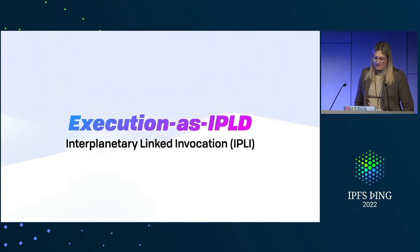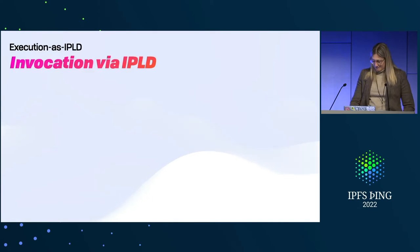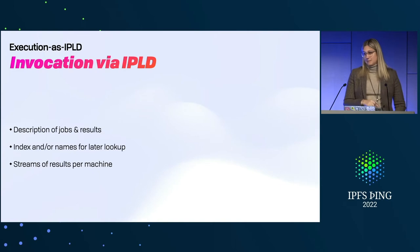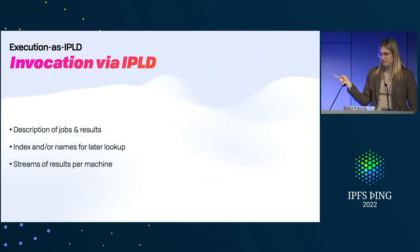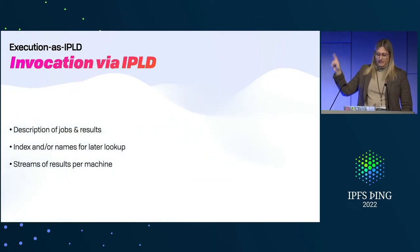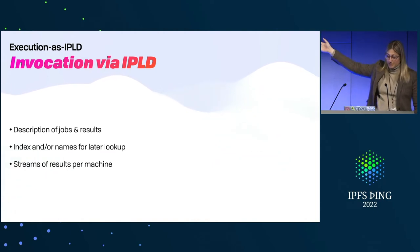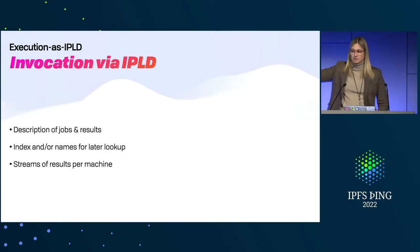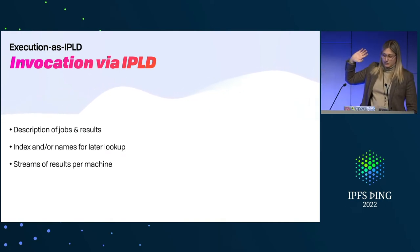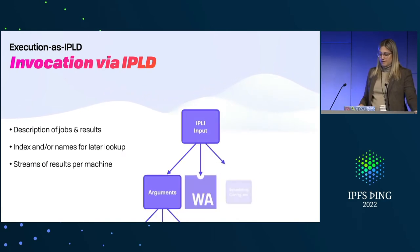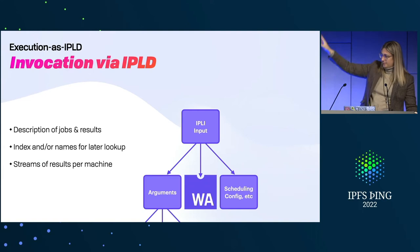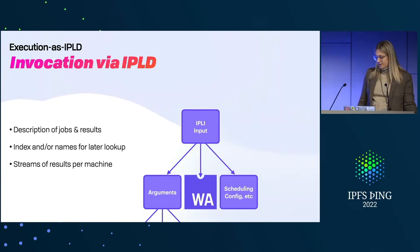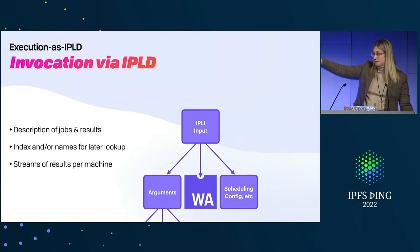Execution as IPLD — or 'interplanetary linked invocation,' or whatever cute name you want. This is a description of the job and the results: not just 'I want to run this module with these arguments,' but I also want to collect what came out of it. We need an index or names — something human readable — for later lookup. What was the result when I asked for this job to be done? And streams of results per machine. So very roughly, this looks something like IPLD: the root node has arguments, which is usually just a byte array, but sometimes we may want actual readable arguments and an ABI.